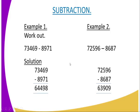We can go to subtraction, whereby you are required to work out example 1: 73,469 subtract 971. In the solution, you just arrange it in column form, then you subtract. 9 minus 1, you get 8; 16 minus 7 to get 9; 13 minus 9 to get 4; 12 minus 8 to get 4; and because you borrowed 1, you get 6.